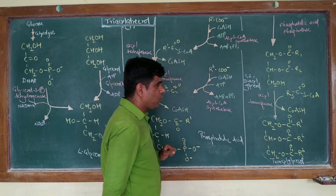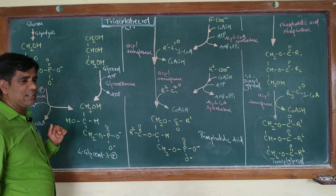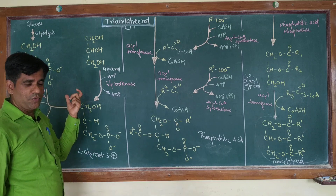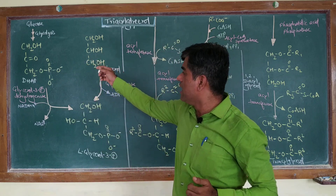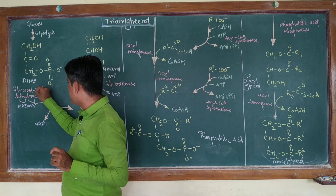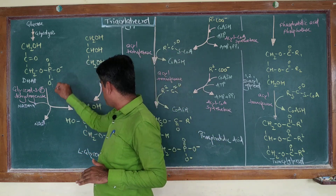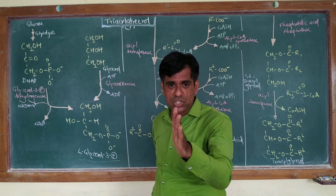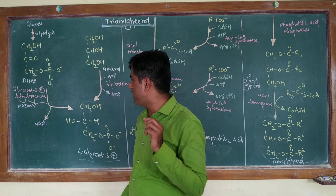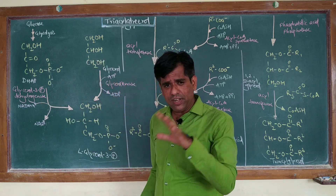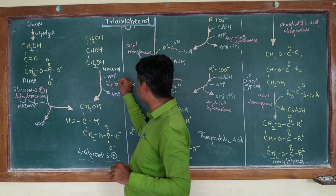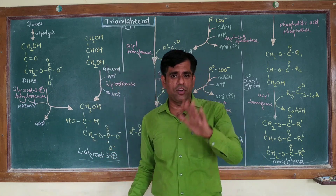From where do you get this particular backbone? In most cases, L-glycerol-3-phosphate is derived from DHAP — the intermediate formed during glycolysis. When your glucose is undergoing glycolysis, there is formation of dihydroxyacetone phosphate. Via an NAD-linked dehydrogenase, that is glycerol-3-phosphate dehydrogenase, it is reduced to form L-glycerol-3-phosphate. In liver and kidneys, some amount of glycerol-3-phosphate may also be formed by the action of glycerol kinase, where glycerol kinase phosphorylates glycerol to form L-glycerol-3-phosphate.